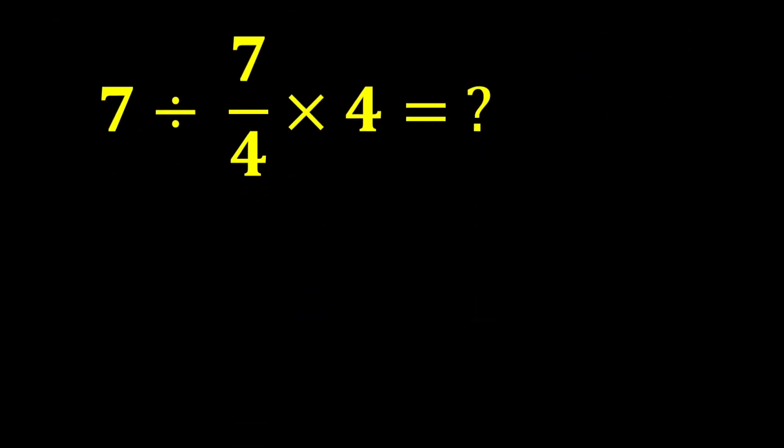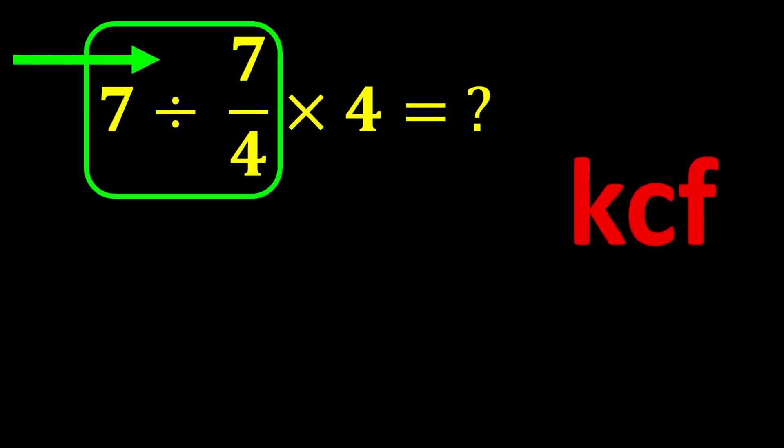In this expression, 7 divided by 7 over 4 times 4, there is both division and multiplication. If we move from left to right, we first encounter division, so we first calculate 7 divided by 7 over 4. To solve this part, we use the KCF rule.